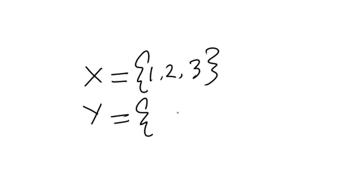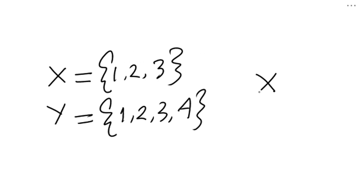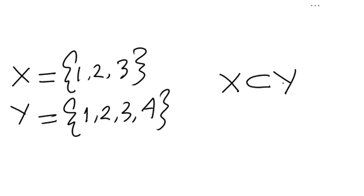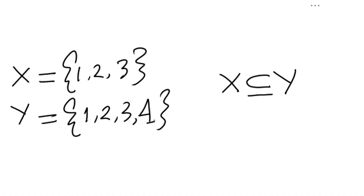The symbol of proper subset does not have any horizontal line under it. The elements of x are 1, 2, 3 and the elements of y are 1, 2, 3, and 4. Here, x is a proper subset of y. However, if we remove the 4, then x becomes just a subset of y — it is no longer the proper subset. If we bring the 4 back, then x again becomes a proper subset of y.